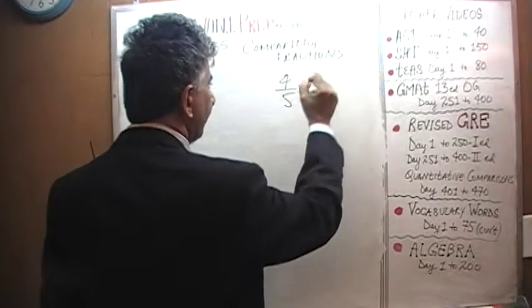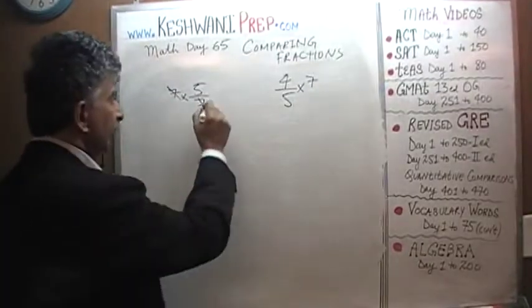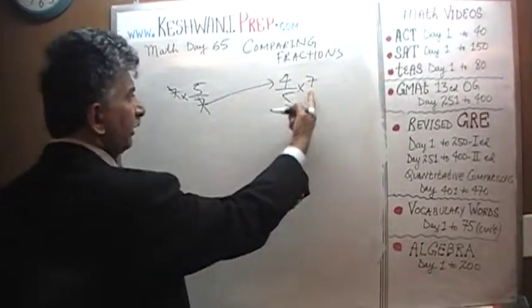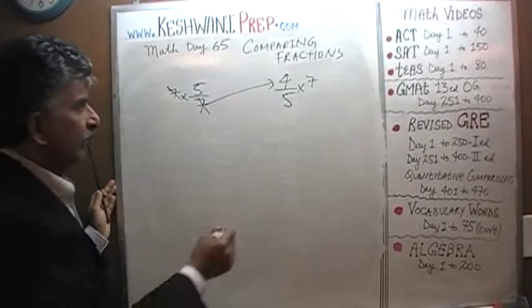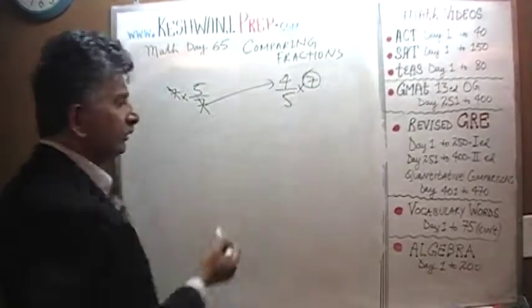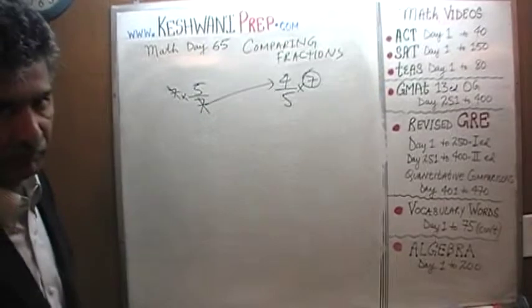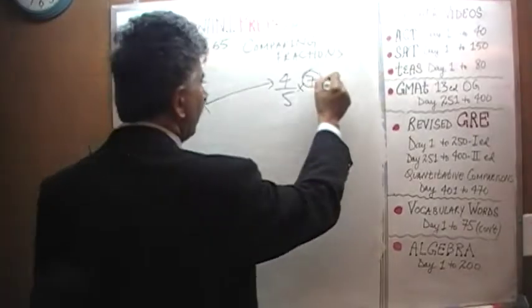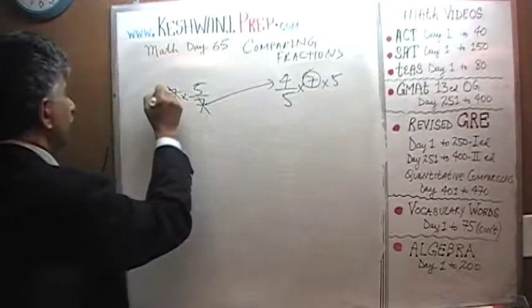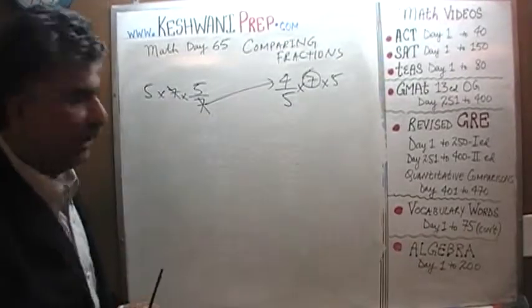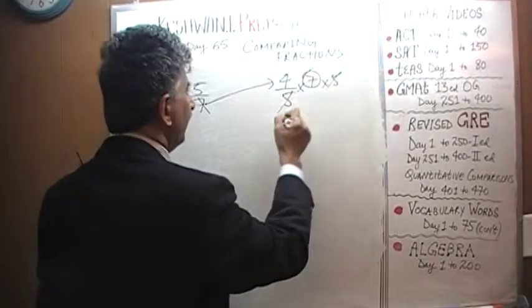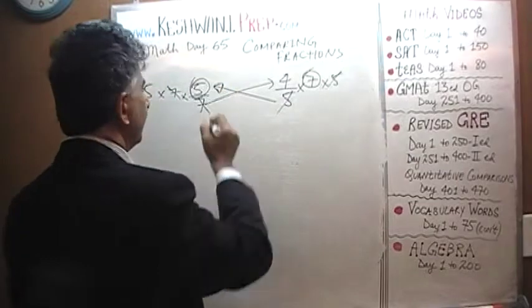Which means we must multiply that fraction by 7 as well. In other words, this 7 disappears from here and reappears there. How do we get rid of this 5 from the bottom here? Same thing. Multiply both fractions by 5. This 5 is going to kill that 5 and this 5 reappears on this side.